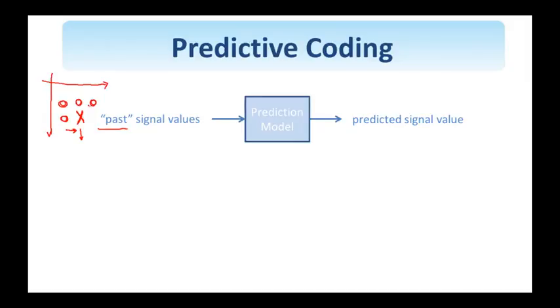The prediction model can be the result of an optimization problem such as minimizing the prediction error as we'll see next week, or it can result from heuristics and excessive experimentation. Of course every time we do a prediction we are bound to make an error. Therefore the reconstructed value equals the predicted value plus the prediction error.